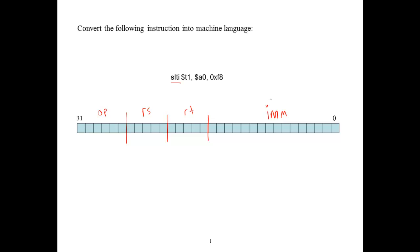We can go ahead and fill in the immediate straight away. The provided immediate is the hex value 0xF8. Recall that each hexadecimal character encodes 4 bits, so the F and the 8 specify the last 8 bits of the immediate.